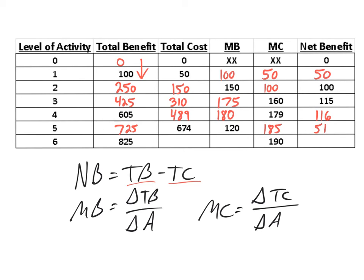For the last row, we know marginal cost is 190, so what must total cost be? Not 700 — it would be 864, because going from 674 to 864 is a marginal cost difference of 190. For net benefit, we take 825 minus 864 and get a value of negative 39. And marginal benefit is 100, because we're going from 725 to 825.